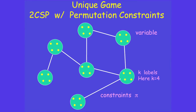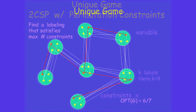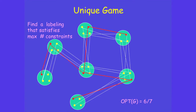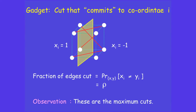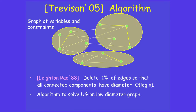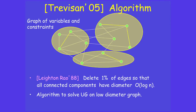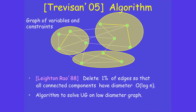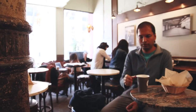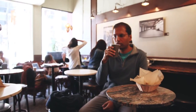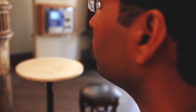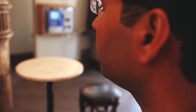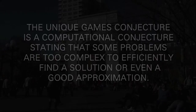One of my important contributions has been proposing the unique games conjecture and then developing research around this conjecture. I was vacationing in India, visiting family, when this small idea came to me — that if I use this unique games conjecture as a starting point of my field of research, it would really make the whole field easier and very consistent.